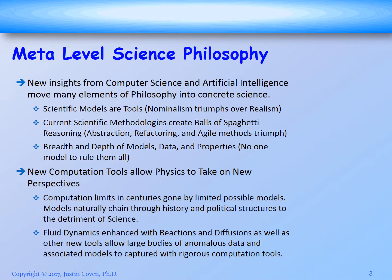Current scientific methodologies create balls of spaghetti, as discussed in detail in the earlier videos. Many new tools developed within computer science — such as abstraction, refactoring, and agile methods — trump any possible models we're currently using, such as peer-reviewed journals or other scientific methodologies. Further, several important things in science include having a breadth and depth of models — there's no one model that rules them all — as well as a breadth and depth of data, and understanding the properties of models and data and how they relate to each other.